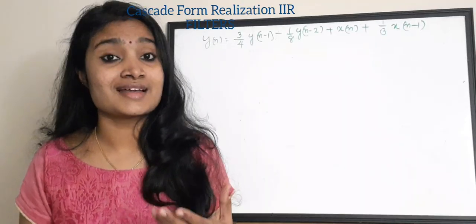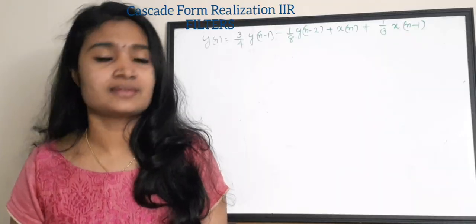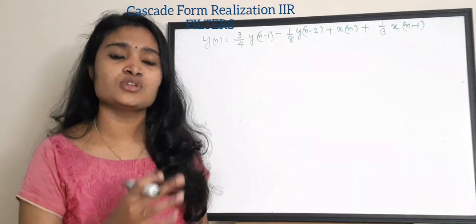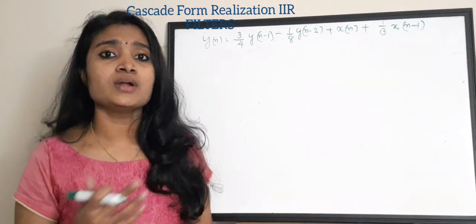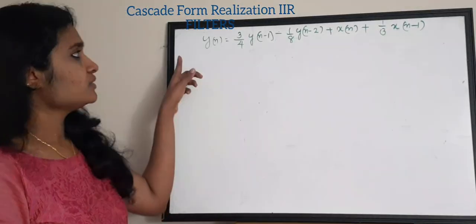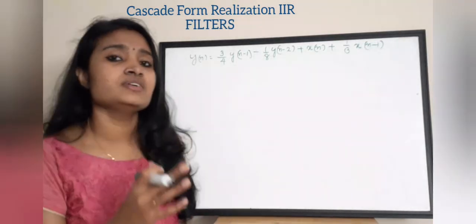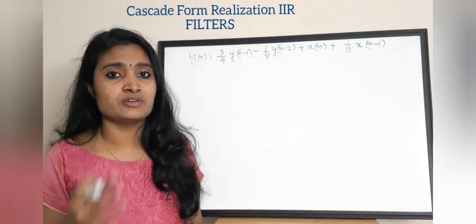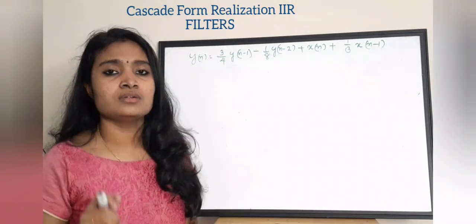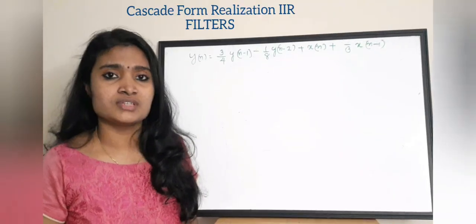Let us see what cascade form realization is — that is, how the cascade form realization is done. In cascade form realization, what we are doing is we are actually going to cascade something, and what we are cascading here is the transfer functions. So we are given an expression like this: there is a Y(n) given. This Y(n) is the output function. First, what we need to do is take the Z-transform of this expression.